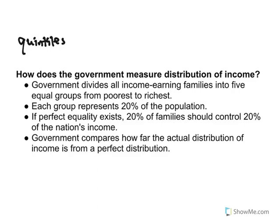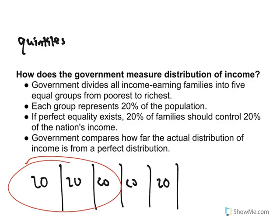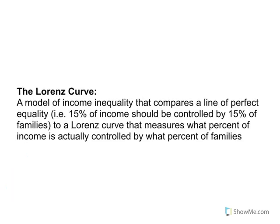We divide it up into five groups — one, two, three, four, five — each at 20%. If I pick 60% of the nation, they should be controlling 60% of the income. One way we can visually show how far away we are from that is with something called the Lorenz curve.